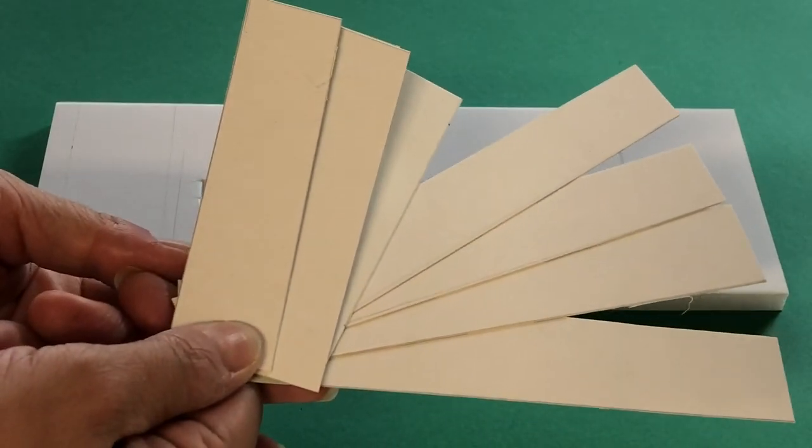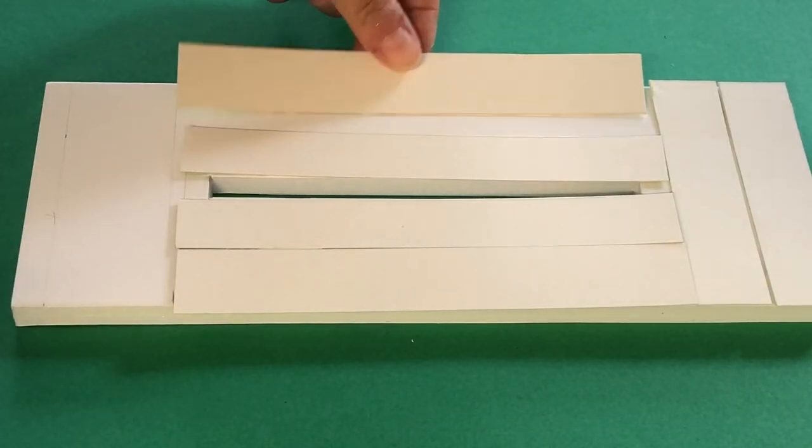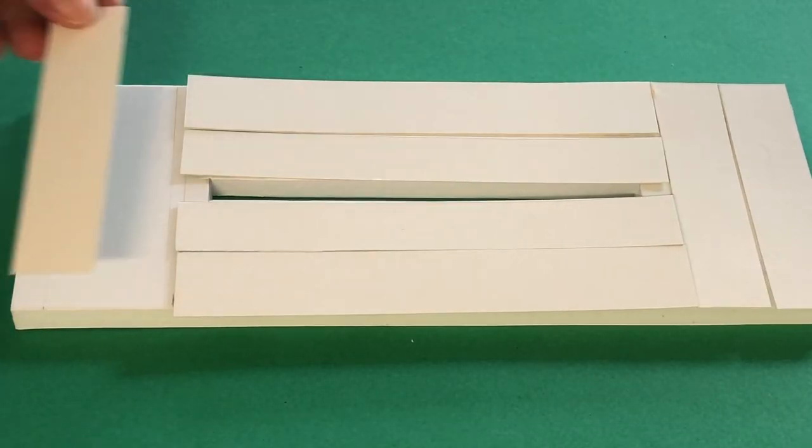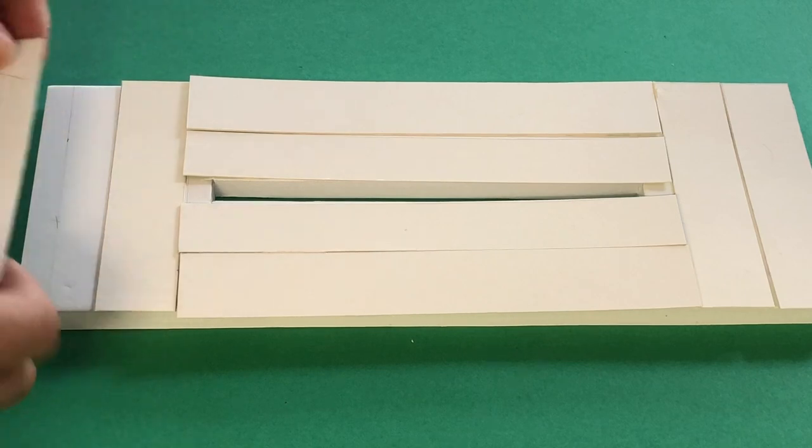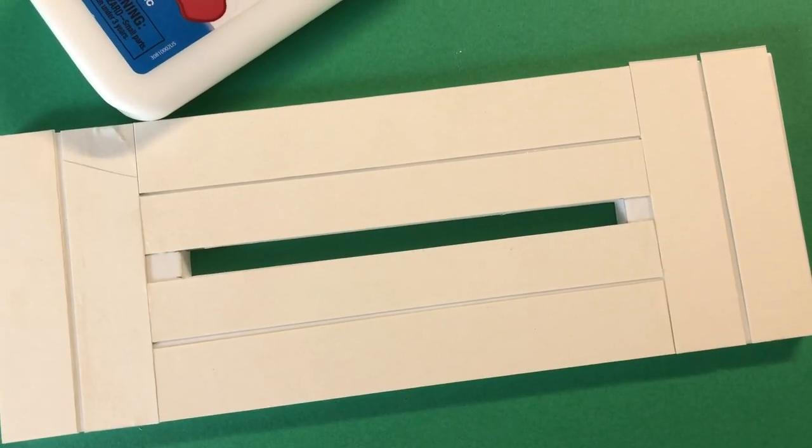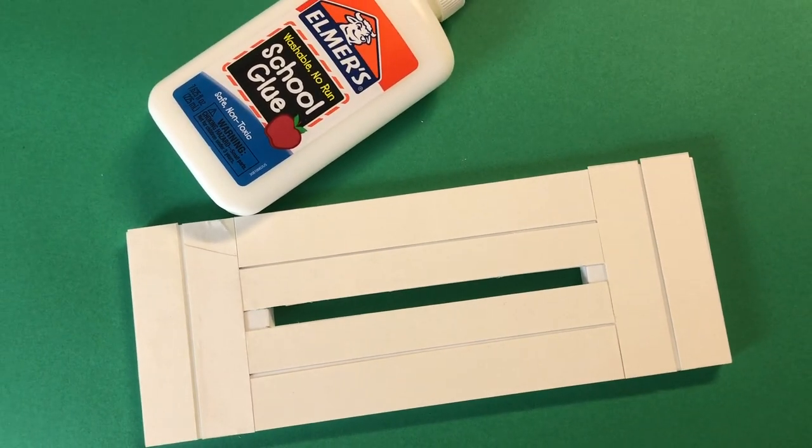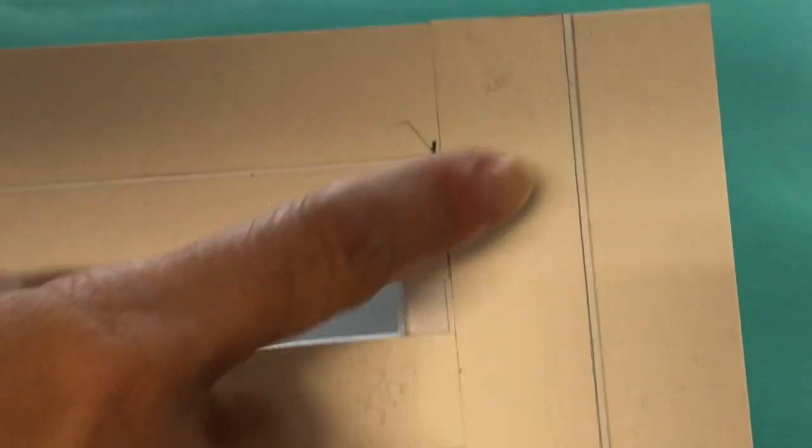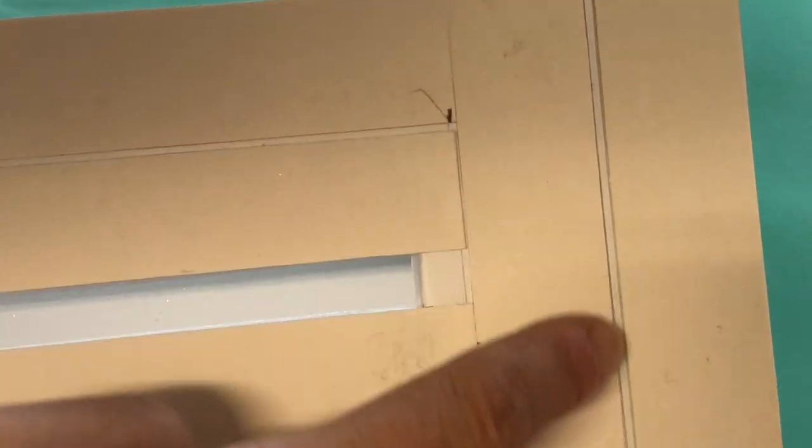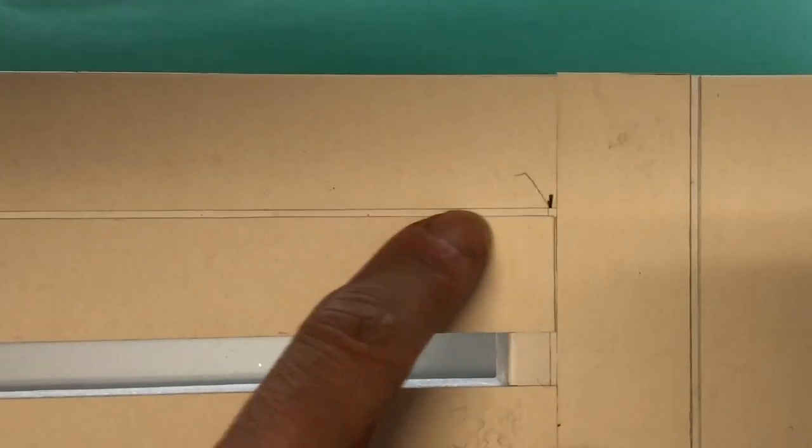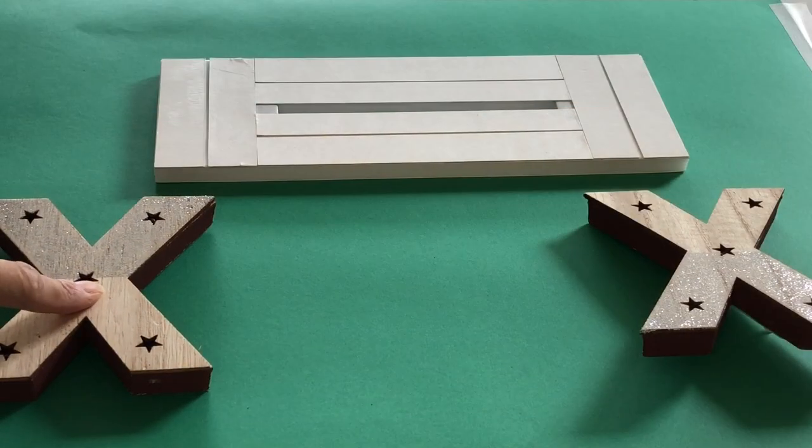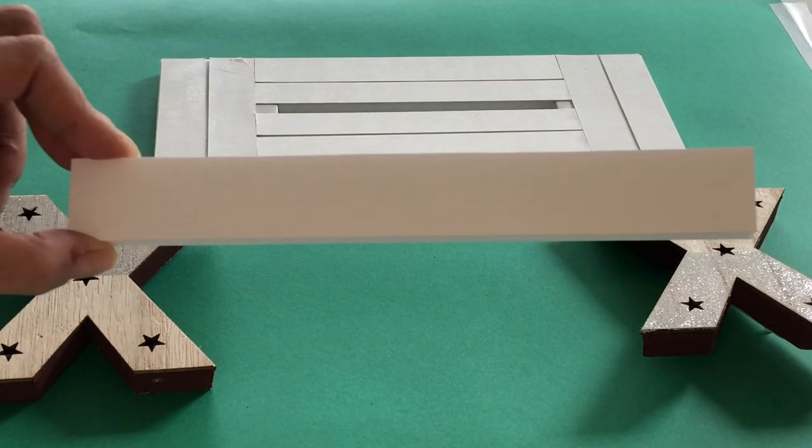Place two shorter strips vertically on the outer sections of the bench and two longer strips horizontally above and below the rectangular gap. Adhere with liquid glue or glue stick. Leave a tiny gap between your strips to further mimic the look of wooden planks. To complete the bench, cut a rectangle of foam board for the under seat support beam.